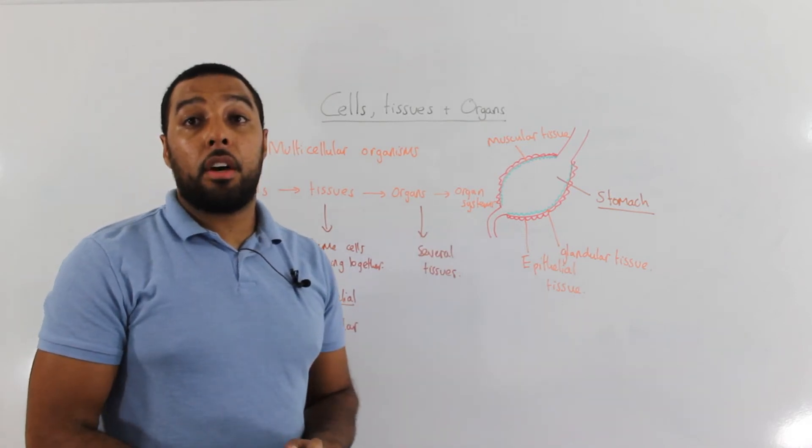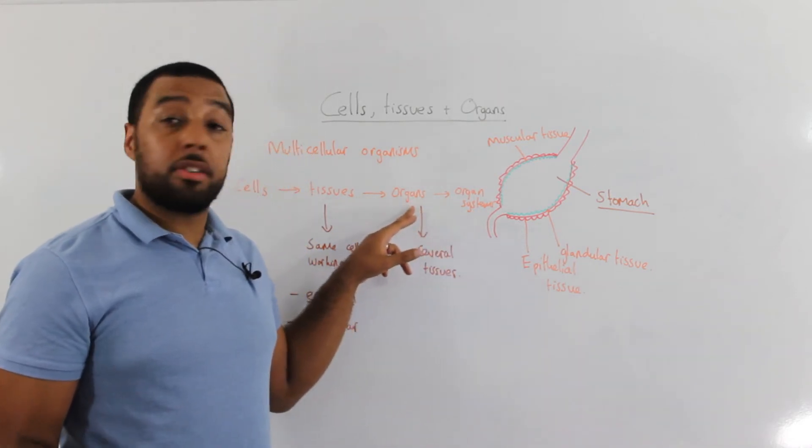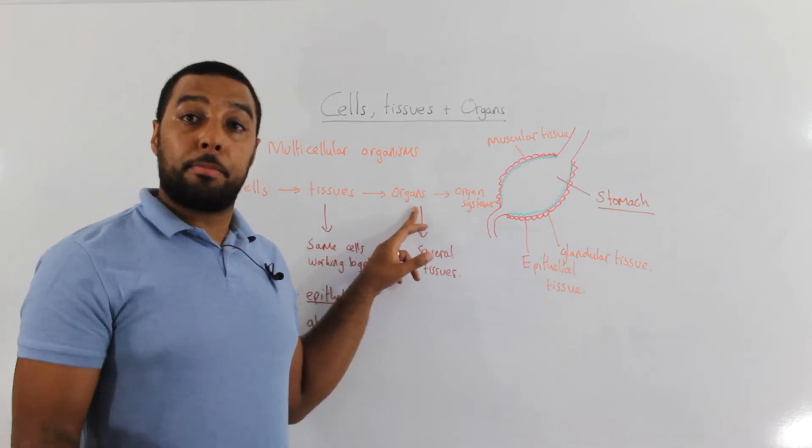We also have the nervous system and the nervous system consists of the brain and the spinal cord.